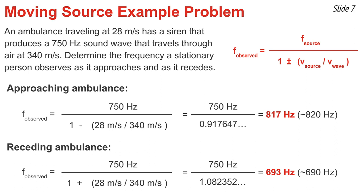The frequency observed as the ambulance approaches is greater than the siren's frequency of 750 hertz, and the frequency observed as the ambulance moves away from the observer is less than the siren's frequency of 750 hertz.